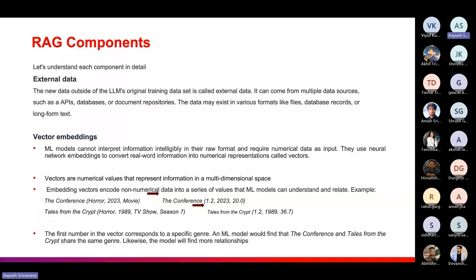The second component is vector embeddings. Machine learning models cannot interpret information in raw human language format, so we use neural network embeddings to convert relevant information into numerical representations called vectors — hence the term 'vector embeddings.' We convert real-world information into multiple vectors, which are simply a series of numerical data.